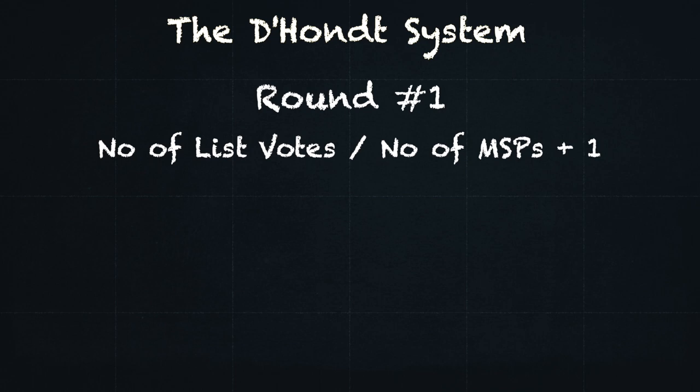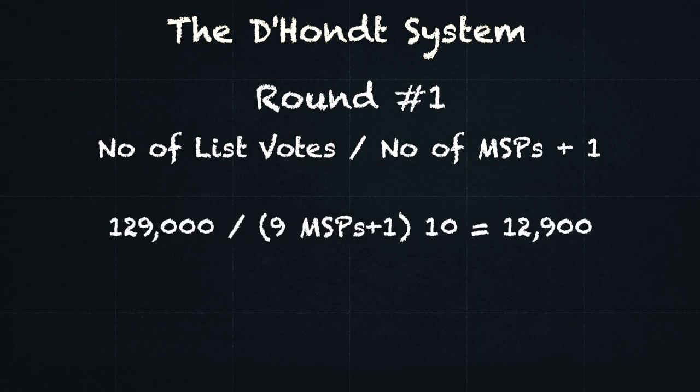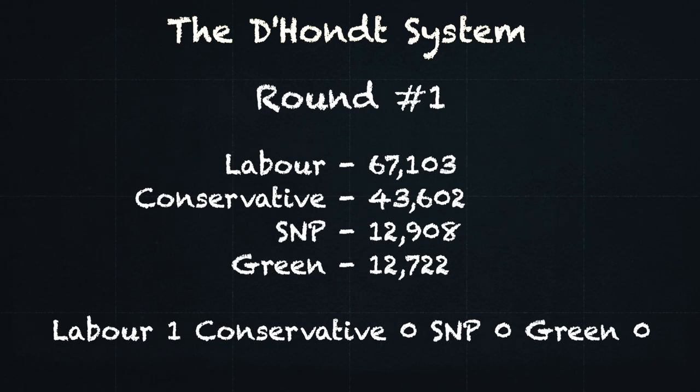In the example for Central Scotland in 2016, the SNP got the largest number of list votes — 129,000. But they won all 9 constituency seats, so they start with a total number of votes divided by the number of MSPs, 9, plus 1. This gave the SNP a starting total of 12,908 votes, putting them third overall.